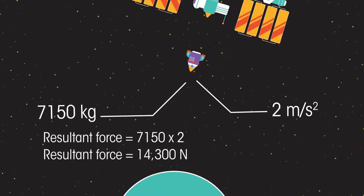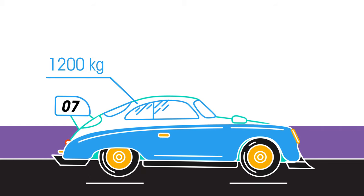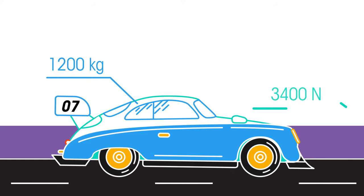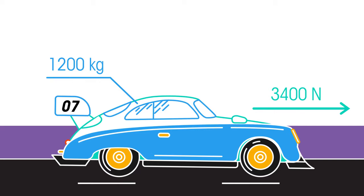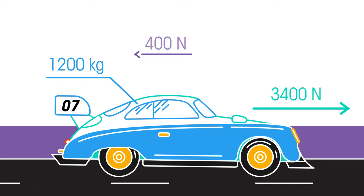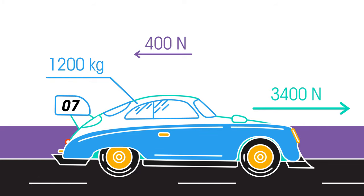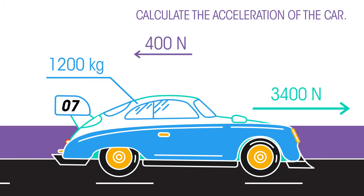How about this example? A car of a mass of 1,200 kilograms starts moving and accelerates on a racetrack. The car's engine produces a constant force of 3,400 newtons. A constant frictional force of 400 newtons acts on the car. Calculate the acceleration of the car. Pause the video while you work it out.